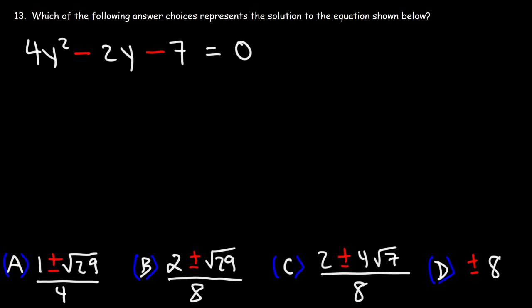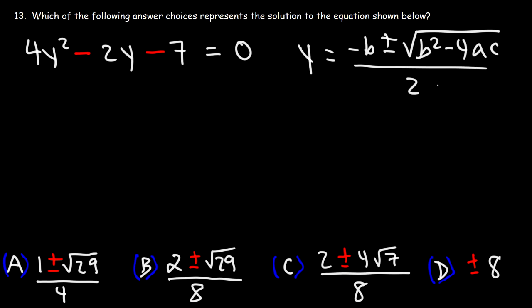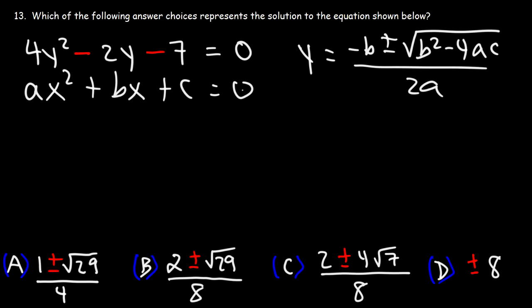Number 13. Which of the following answer choices represents the solution to the equation shown below? Looking at our answer choices, we can see we need to use the quadratic formula: y equals negative b plus or minus the square root of b squared minus 4ac, all divided by 2a. Here c is negative 7, b is negative 2, and a is 4.